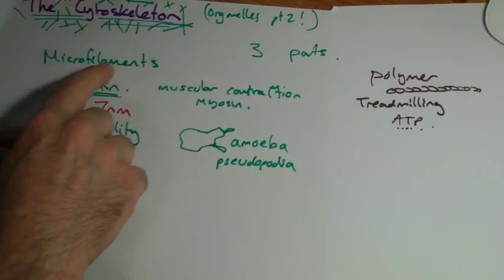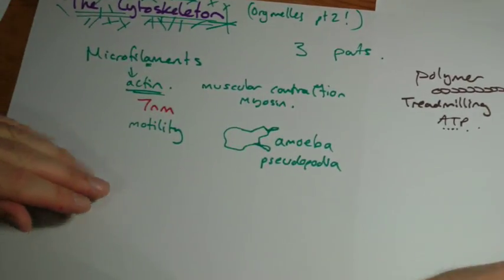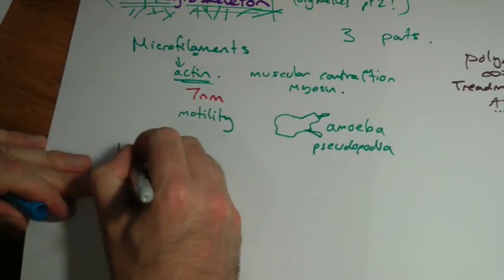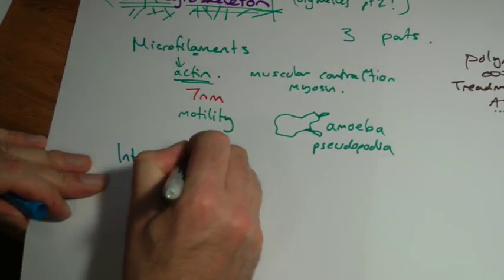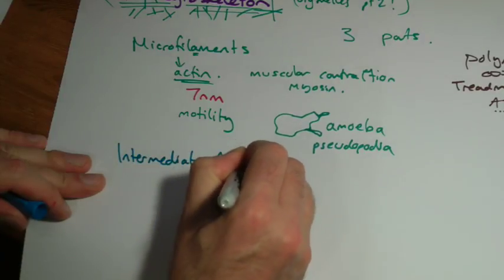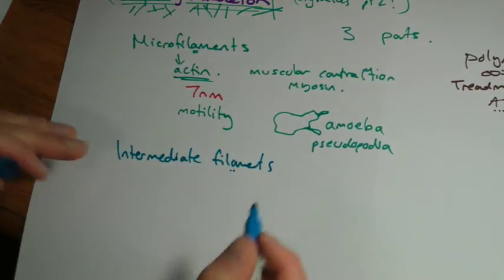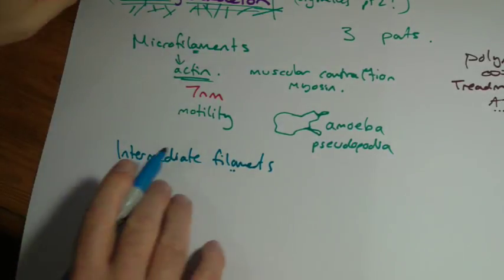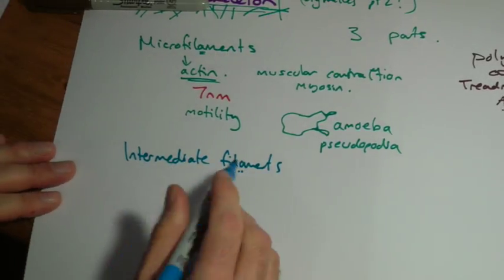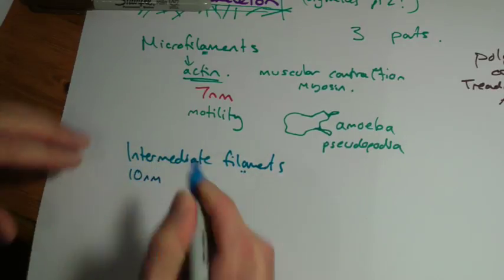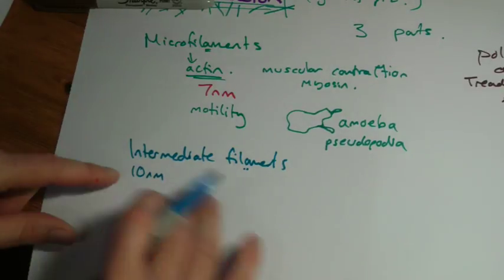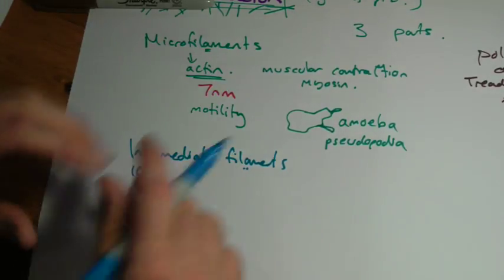That's the microfilaments with actin. I'll use a different color for the next one. Intermediate filaments - I know you might say, hang on, that's got an A in it as well, but you'll just have to deal with it. Intermediate filaments, it's to do with the size of them. They're approximately 10 nanometers. Microtubules are the biggest one, so they're intermediate as in they're an intermediate diameter.